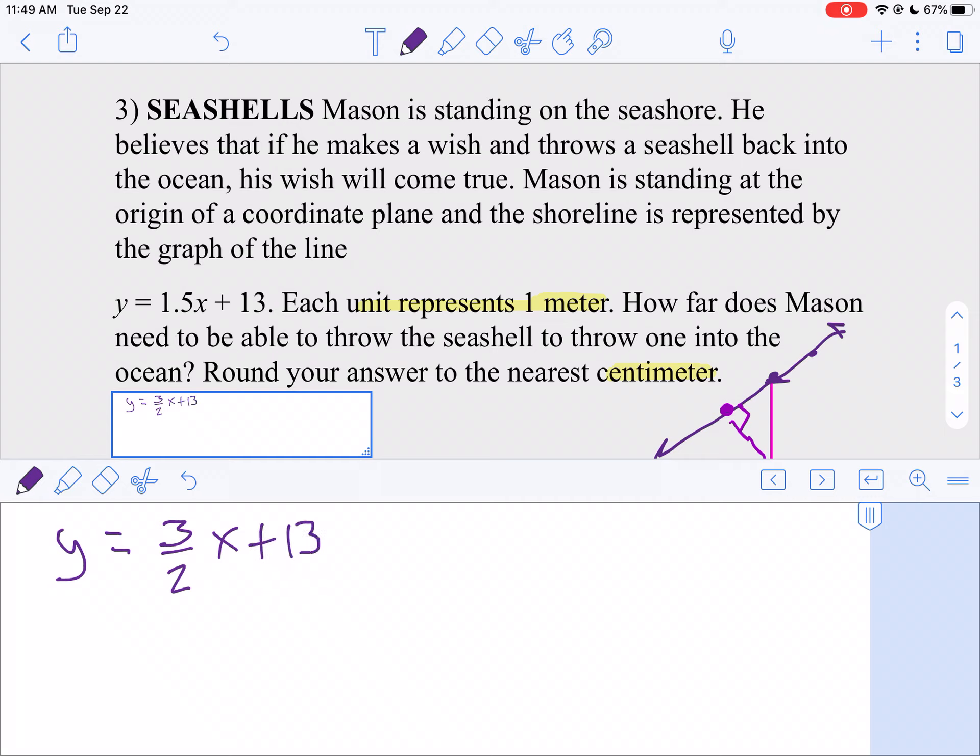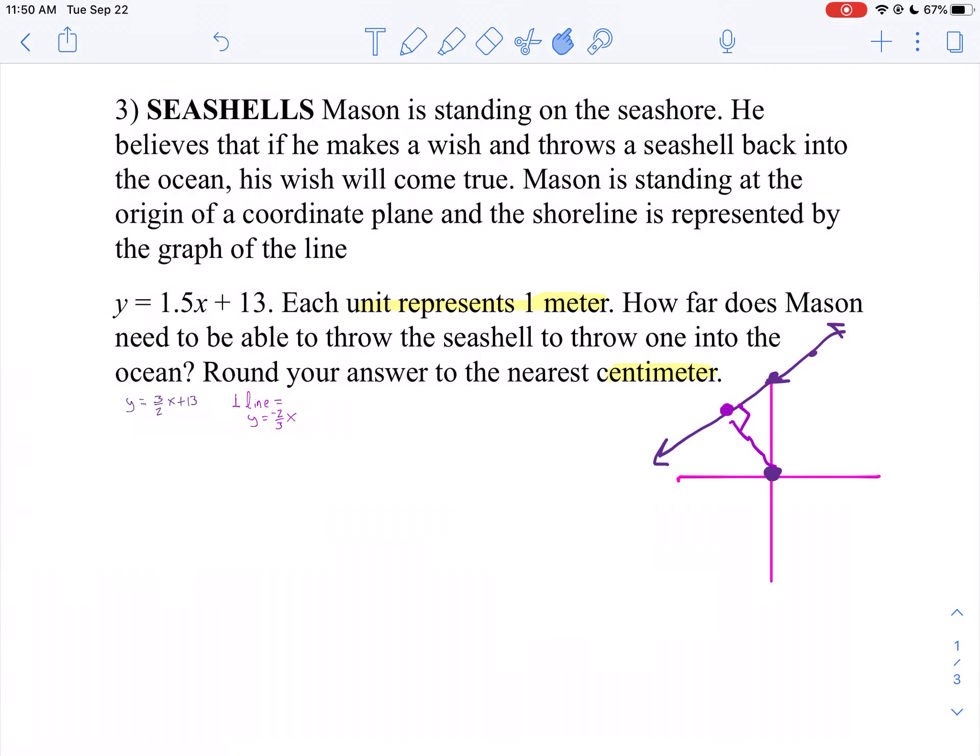Well, the perpendicular line is going to have the negative reciprocal slope. So that's going to be y equals negative 2 thirds x. And since we know it goes through the origin, that's why the equation is negative 2 thirds x.